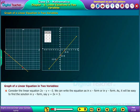Consider the linear equation 2x minus y equal to minus 3. We can write the equation in x form or in y form. As it will be easy to find the solution in y form, say y equal to 2x plus 3.